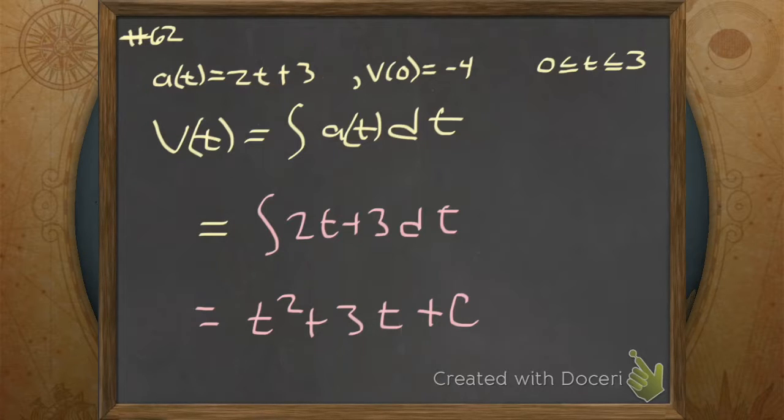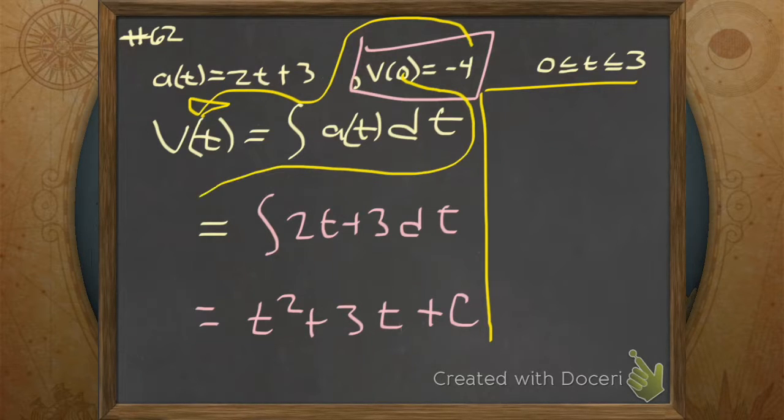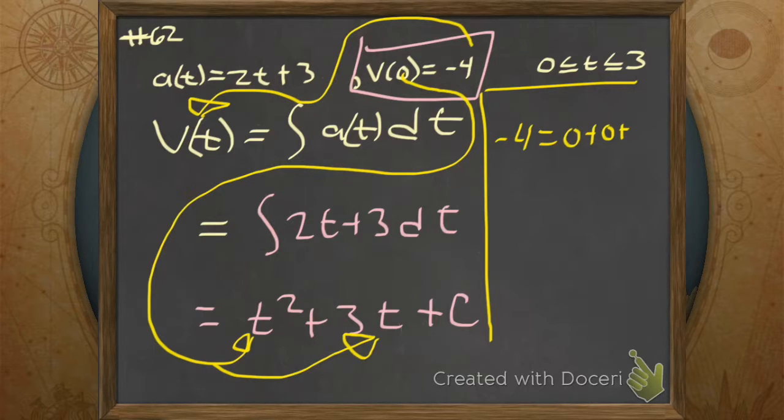So then we're going to use that constraint at the top. What's my t and what's my v? Minus 4. So we put minus 4 where v goes and we put 0 where t goes. We say minus 4 is equal to 0 plus 0 plus C. So C turns out to be minus 4.